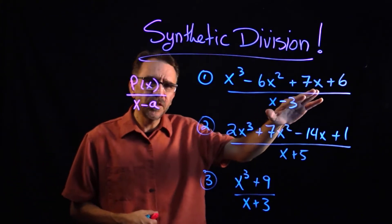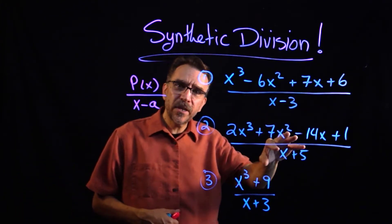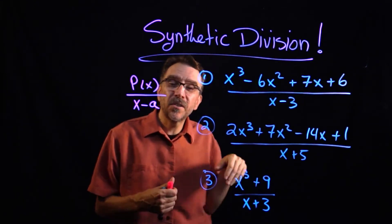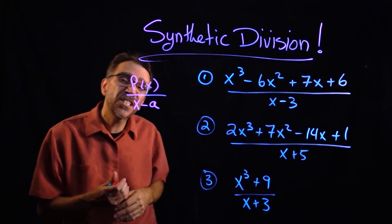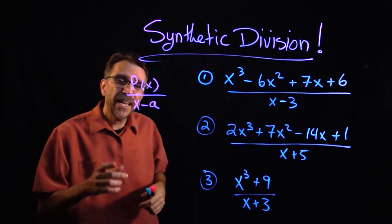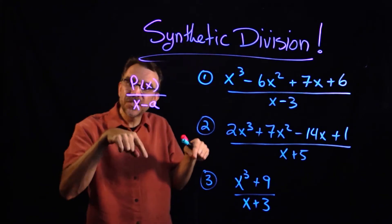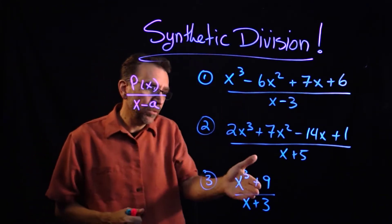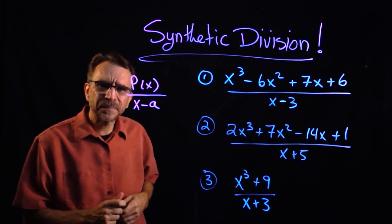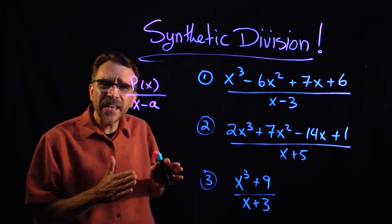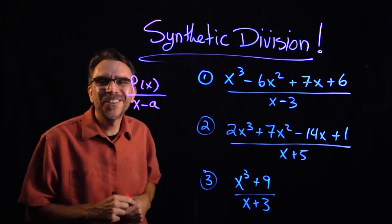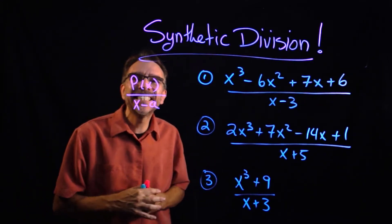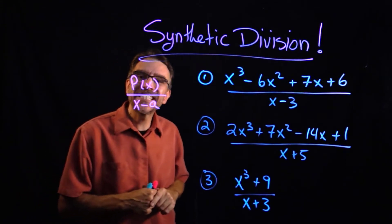This first one has no remainder, the second one has a remainder, and the third one requires placeholders — one of each type. I'll put timestamps in the description linked directly to each problem. If the video helps you, please push the like button, and we'll get started with the first example.